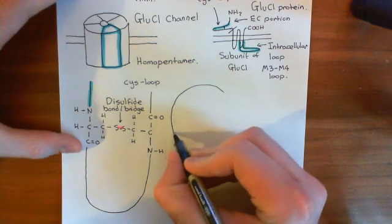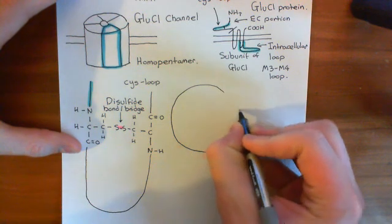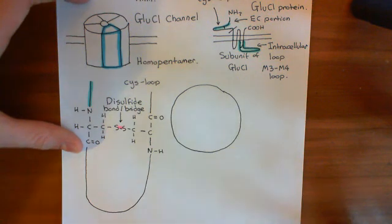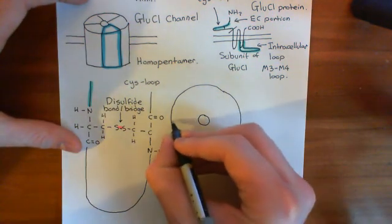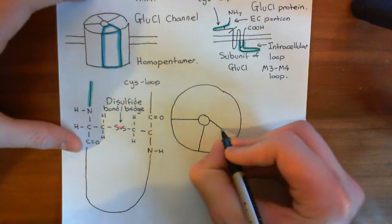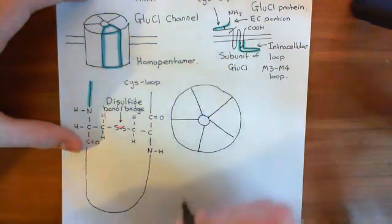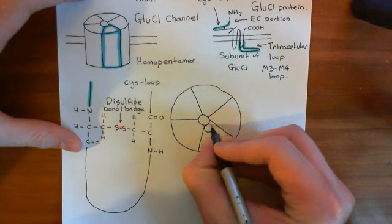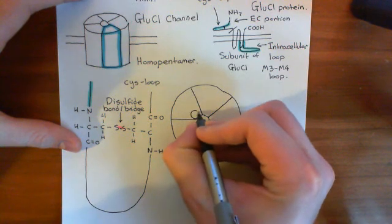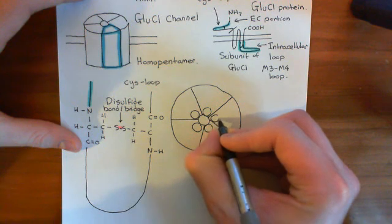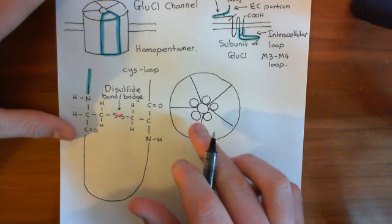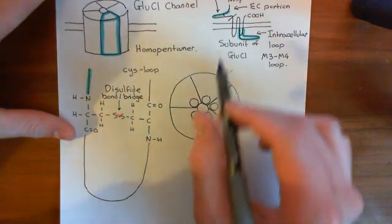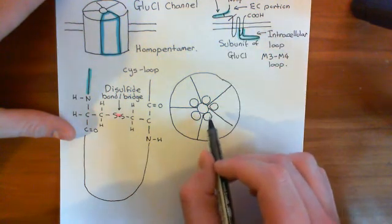If we draw the GluCl channel from above — looking down at the receptor from the top — here's the pore down the middle, made up of five subunits. The M2 membrane-spanning alpha helices actually line the pore of this GluCl channel. Each one of the five subunits contributes its M2 membrane-spanning alpha helix right at the center, so if you are a small ion moving through the pore, the helix you will be encountering is the M2 alpha helix.